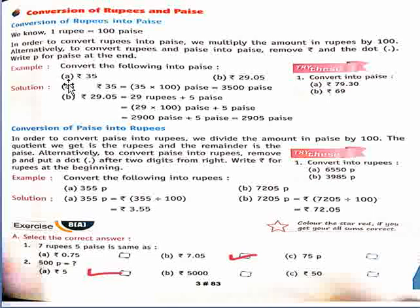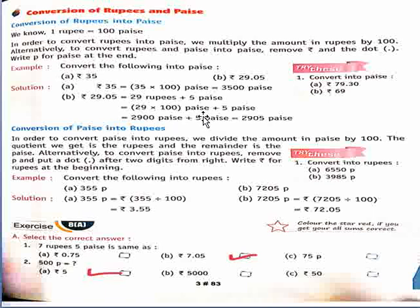See the example. Part a: rupees 35. Firstly, 35 rupees ko hundred se multiply karenge. Symbol of rupees ko remove karenge and last mein paise likhenge. Multiply karke humare 3500 paise hain. Now part b: rupees 29.05. Yahan par humare 29 rupees aur 5 paise hain. Rupees ko hundred se multiply kar denge — 29 × 100 = 2900 paise, aur plus 5 paise. So answer hai 2905 paise.